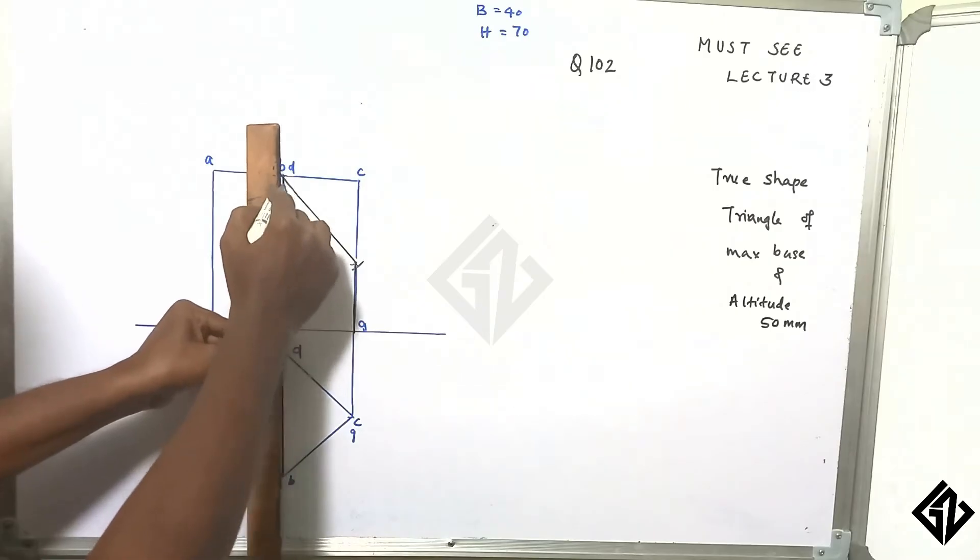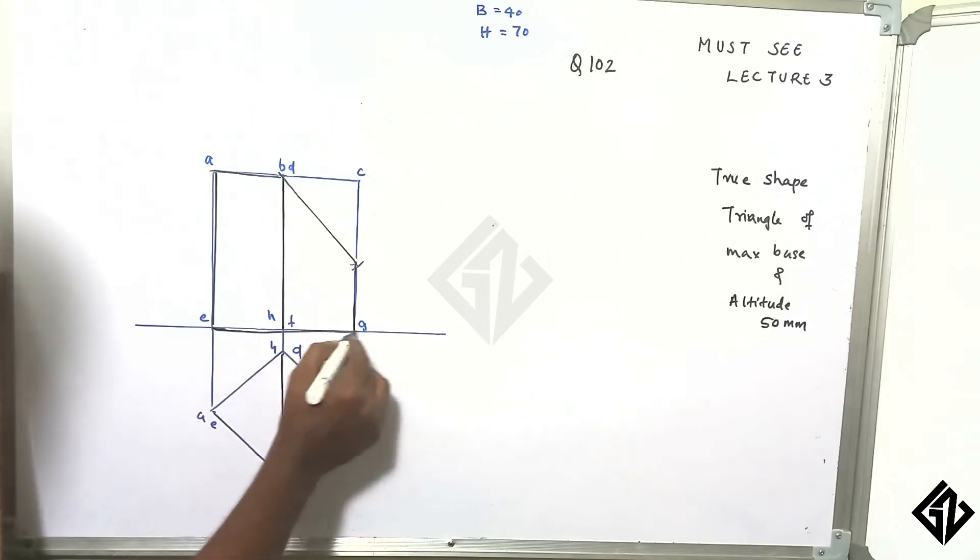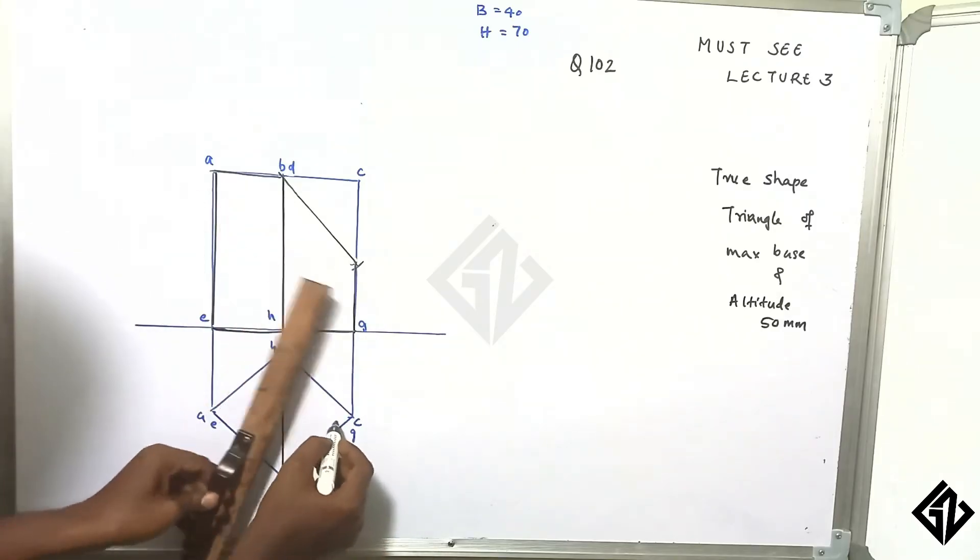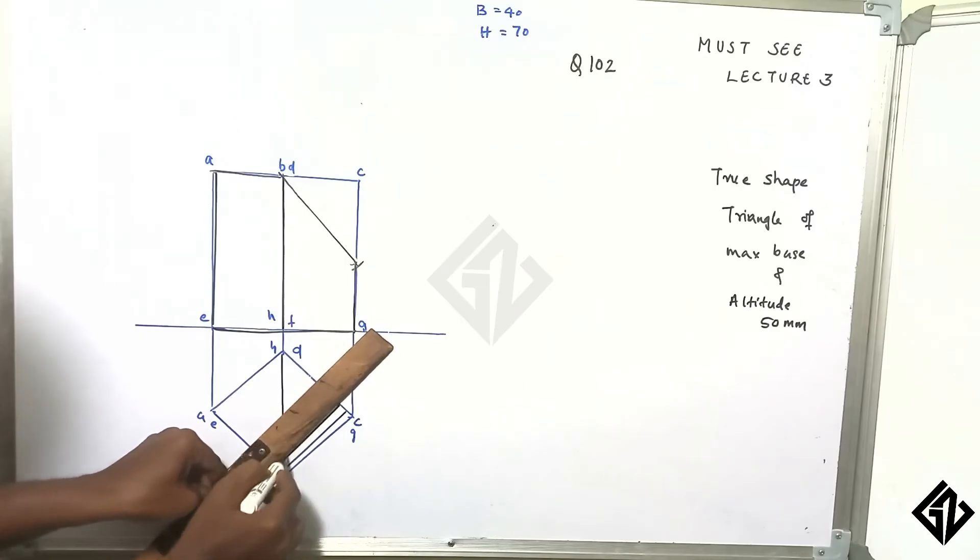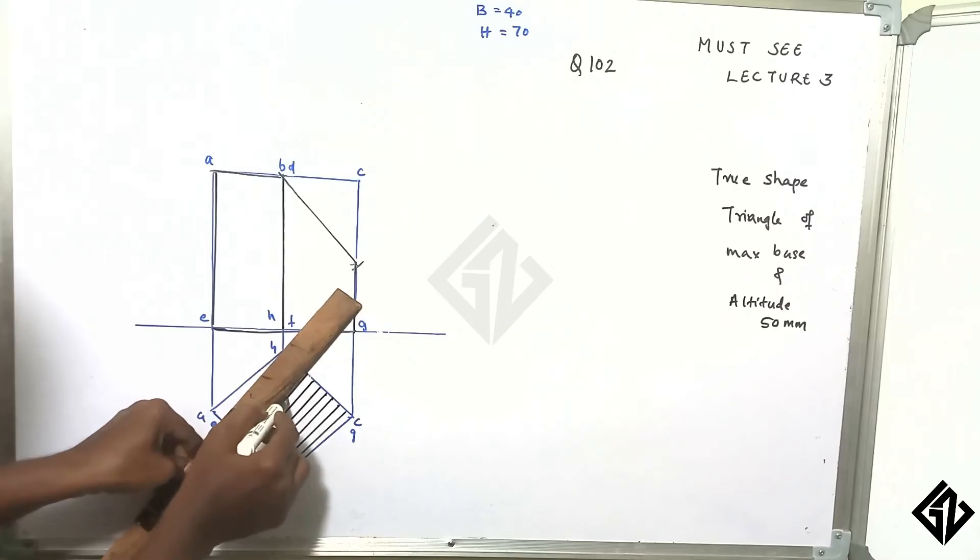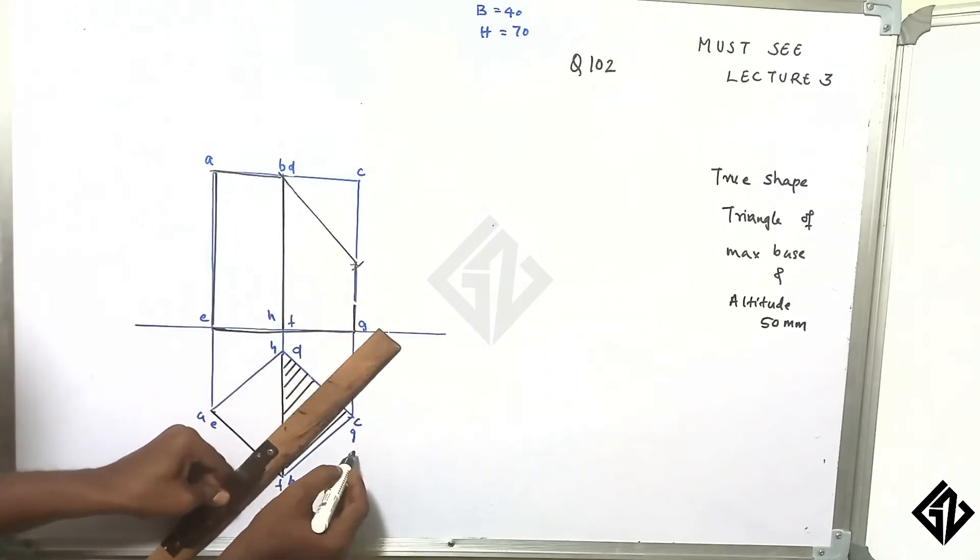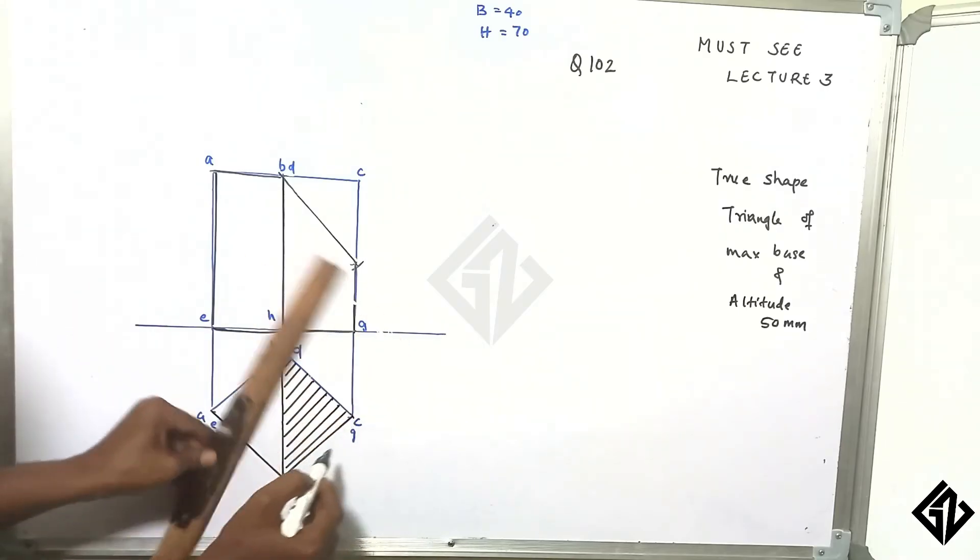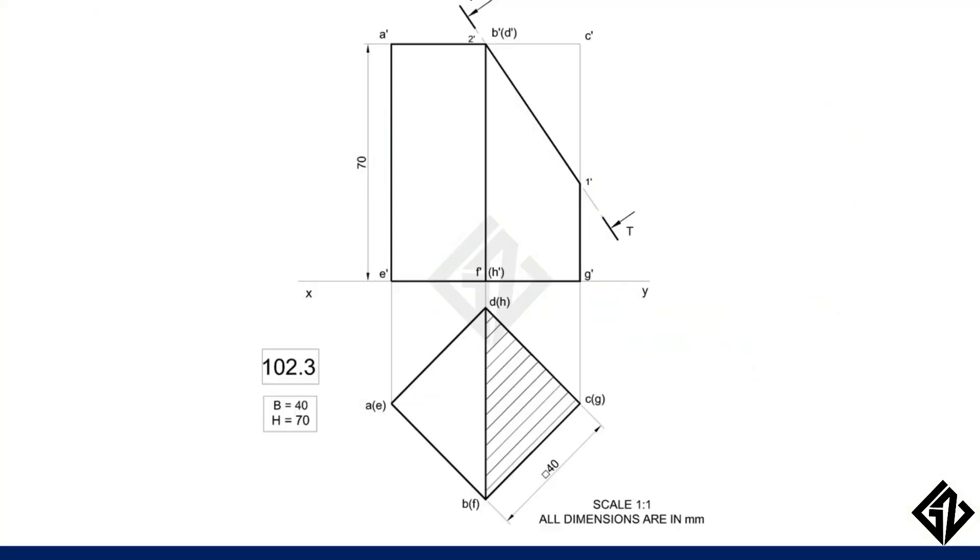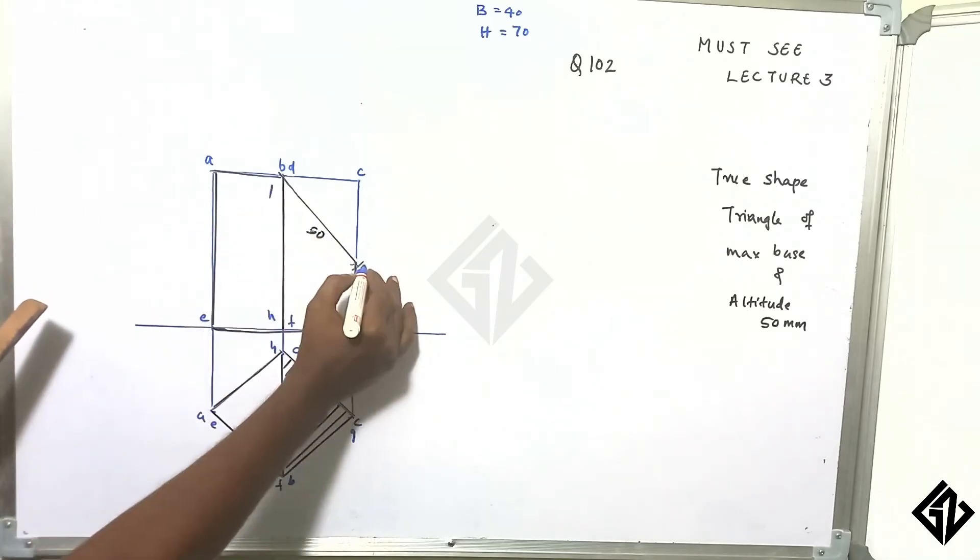I will remove the part here. The section is the same. You can draw the drawing. Then the true shape will be 50, the true shape will be 1 and 2.